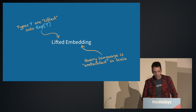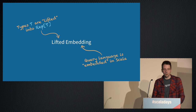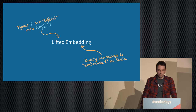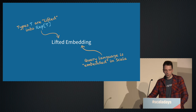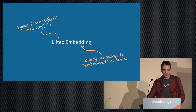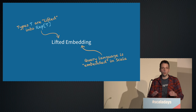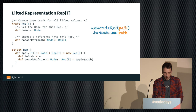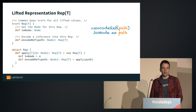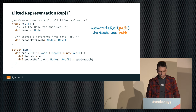Now let's talk about the lifted embedding. Why is it called the lifted embedding? It's called an embedding because the query language is embedded in Scala — it's an internal DSL. It's called 'lifted' because every type T is lifted into a Rep[T], a lifted representation. So when you think you have a value that's an Int, like this thing you're comparing against 42, it's actually not — it's really a Rep[Int].